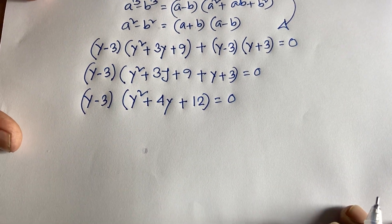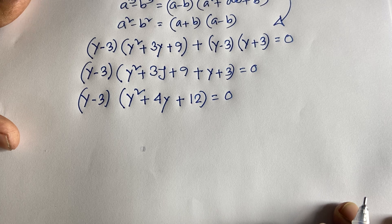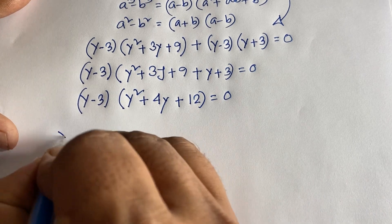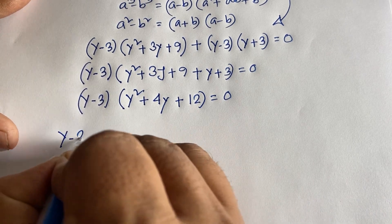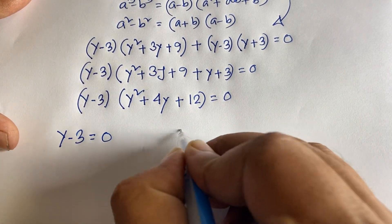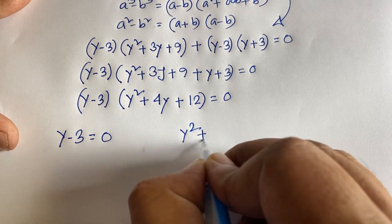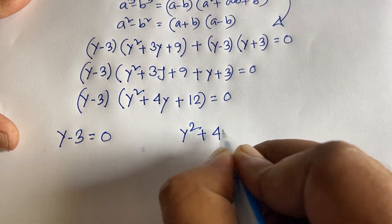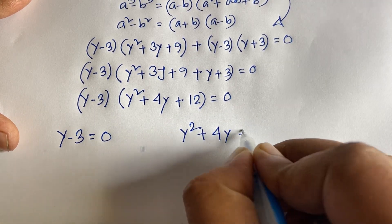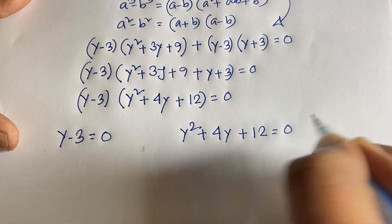We now have two cases. First case: y − 3 = 0. Second case: y² + 4y + 12 = 0, which is a quadratic equation.